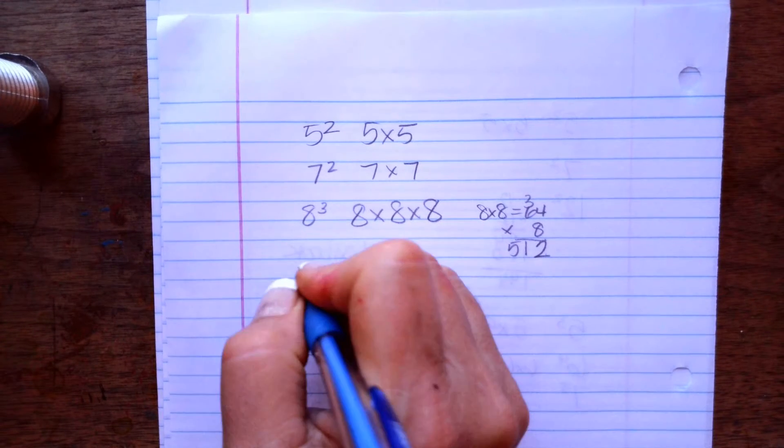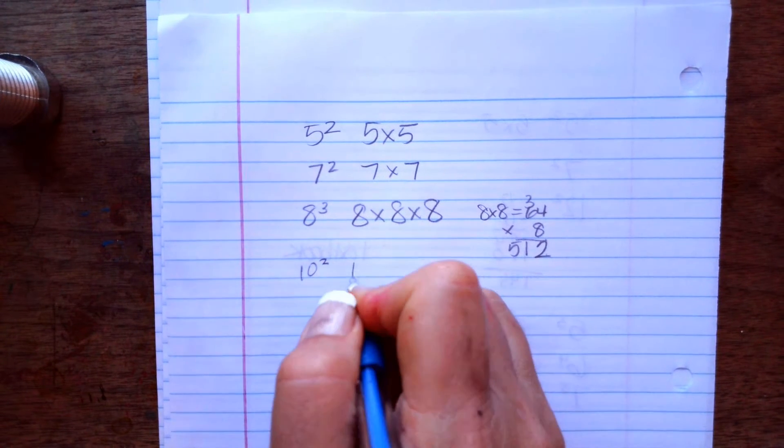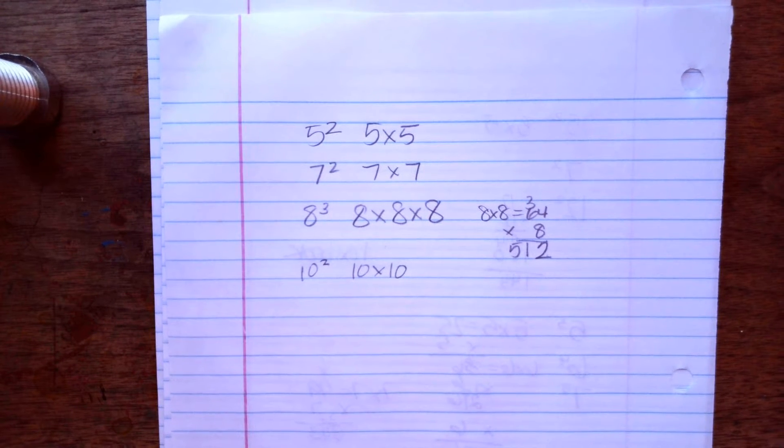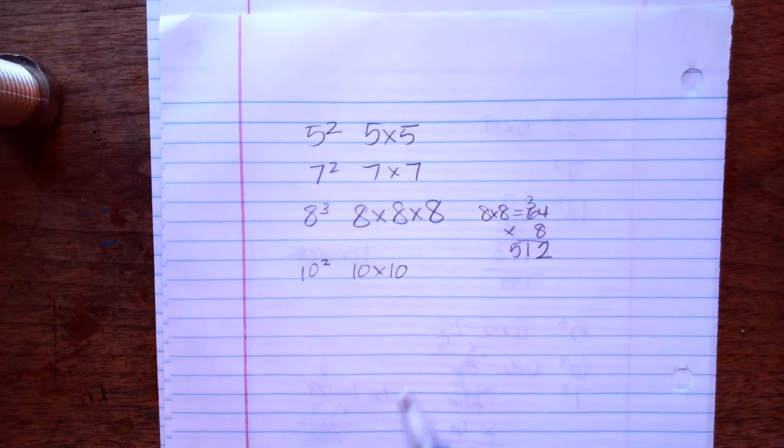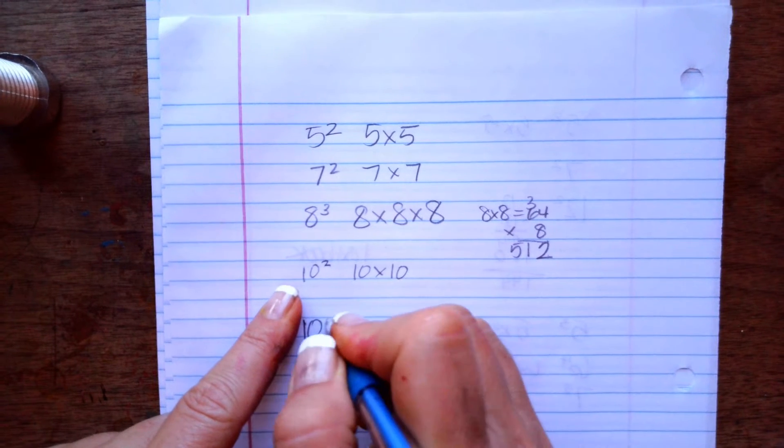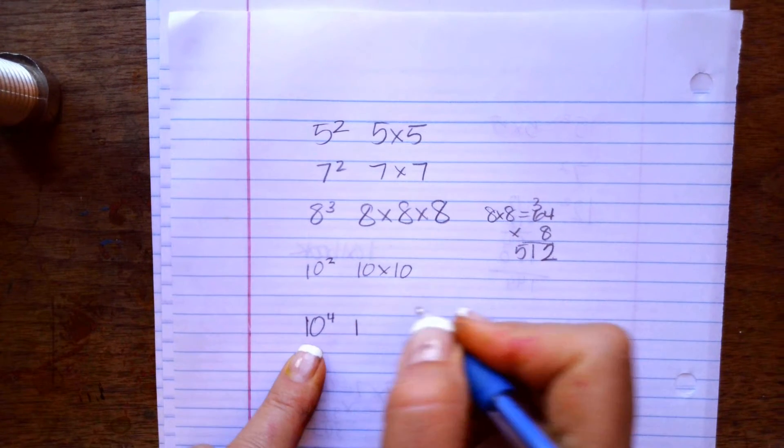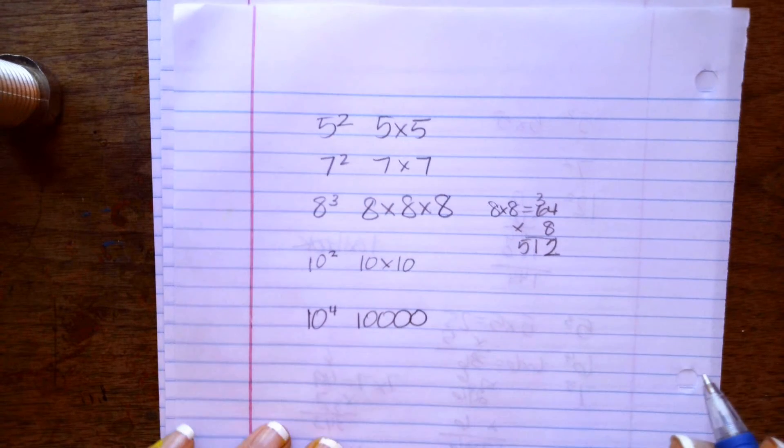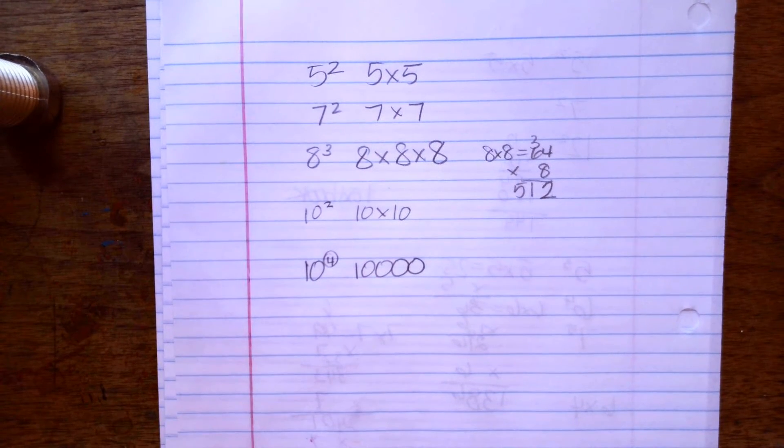Okay, 10 to the second power. Instead of having to do this, this is a shortcut that you could take. So if it was 10 to the fourth power, it means a 1 with 4 zeros. Whatever this is, that tells you how many zeros there are.